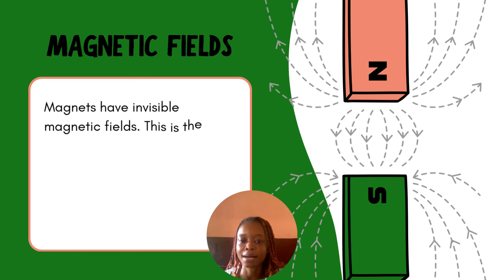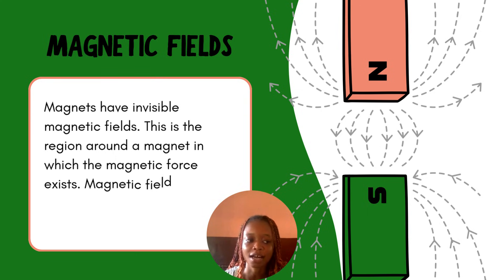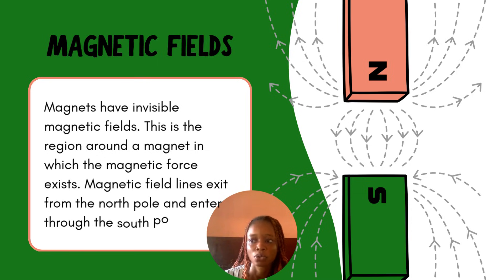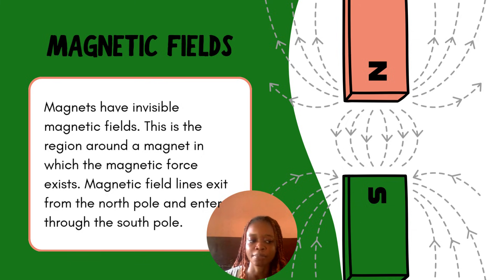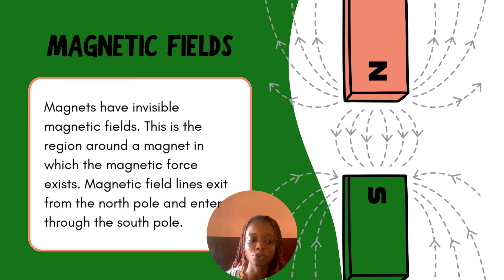Now we have what we call the magnetic field. Magnets have very visible magnetic fields. A magnetic field is a region around the magnet where the magnetic force exists — that region around the magnet where we can feel the magnetic force is what we call a magnetic field. Magnetic fields are simply the regions around a magnet where we can feel the magnetic force.